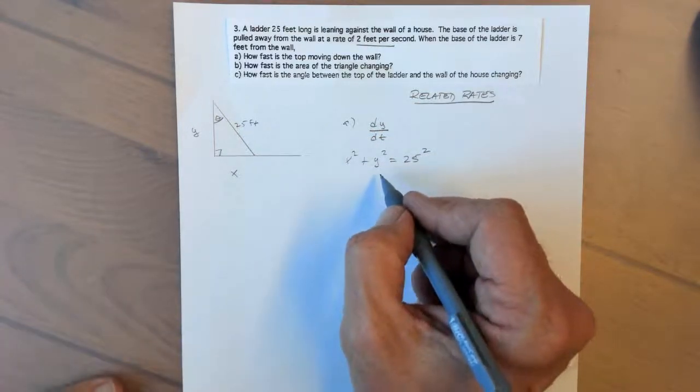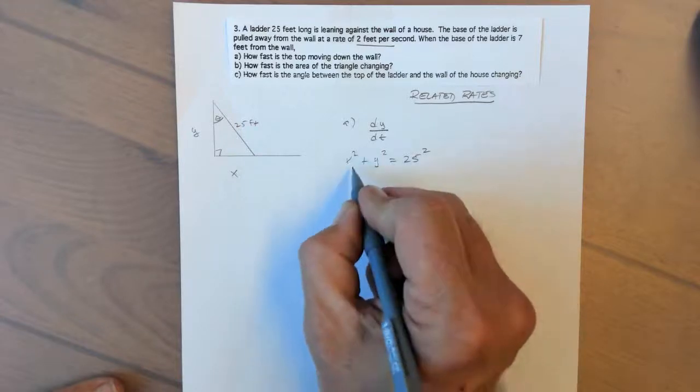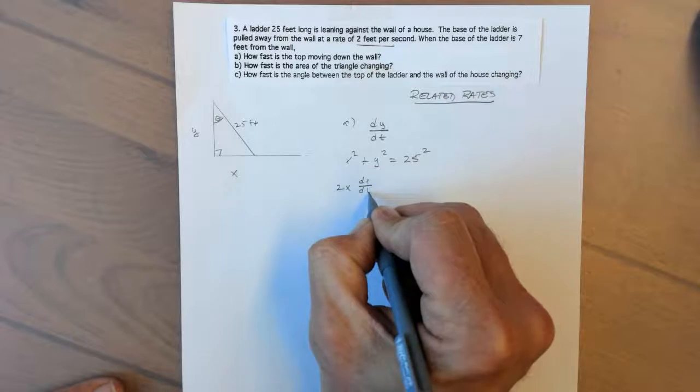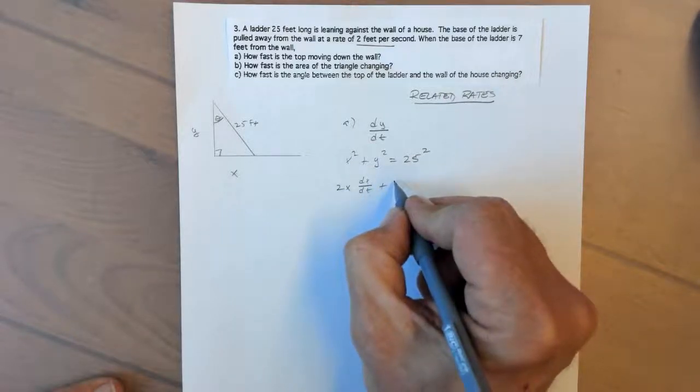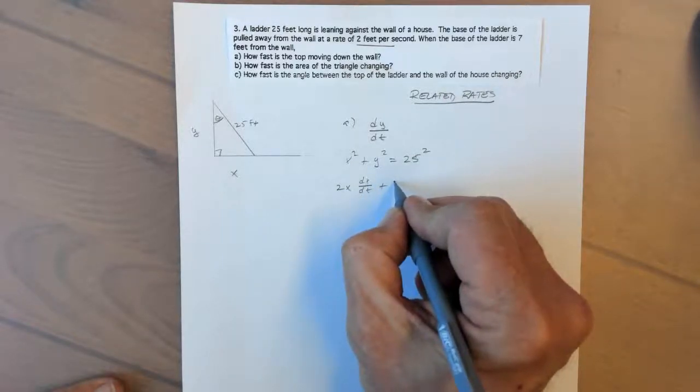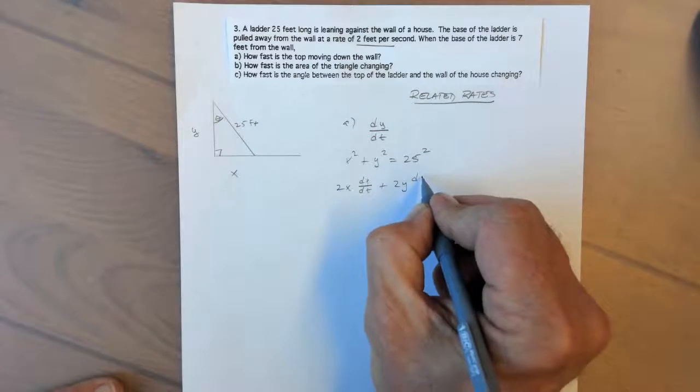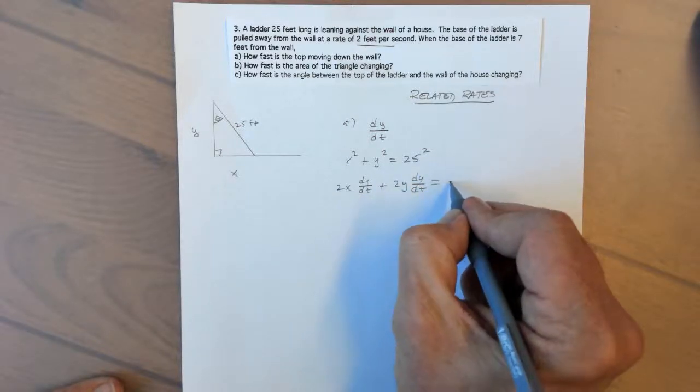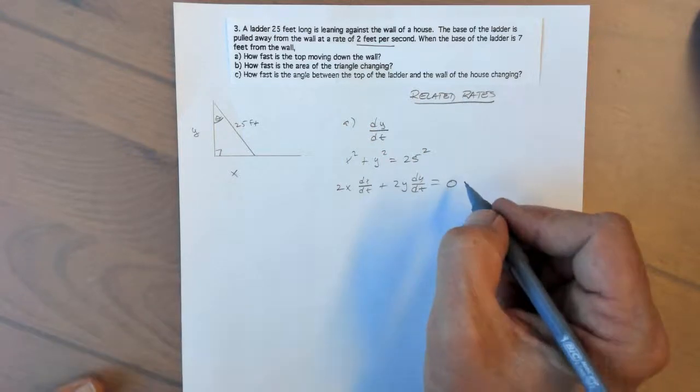So we're going to do implicit differentiation. The derivative of x squared would be 2x dx/dt, then the derivative of y squared would be 2y dy/dt, and the derivative of a constant is 0.